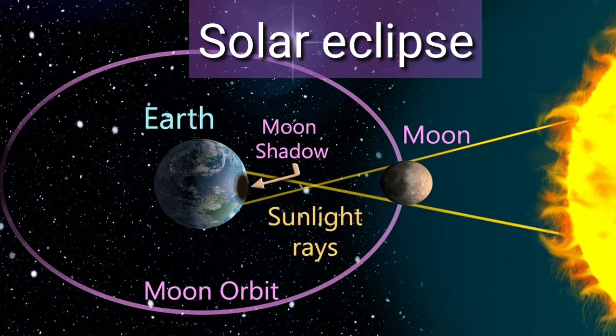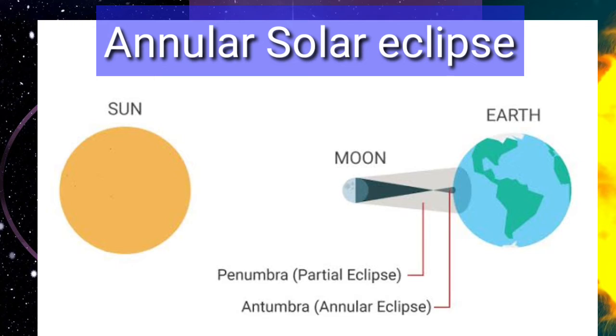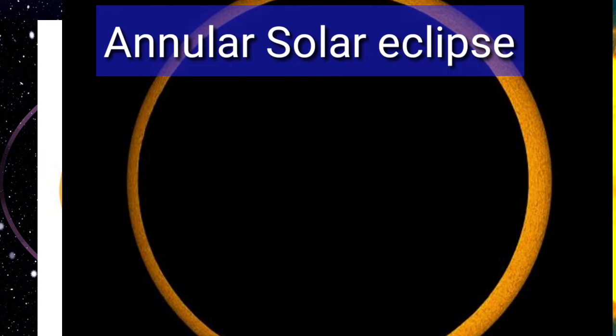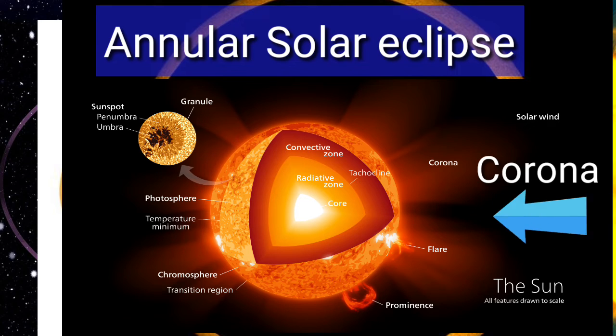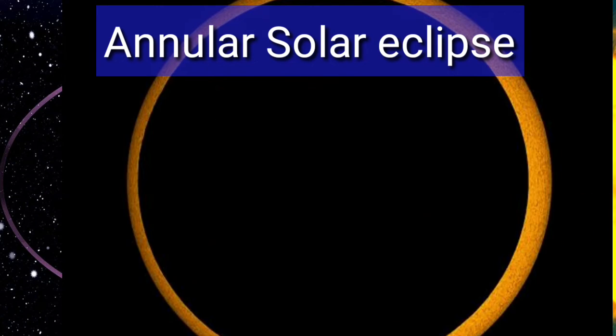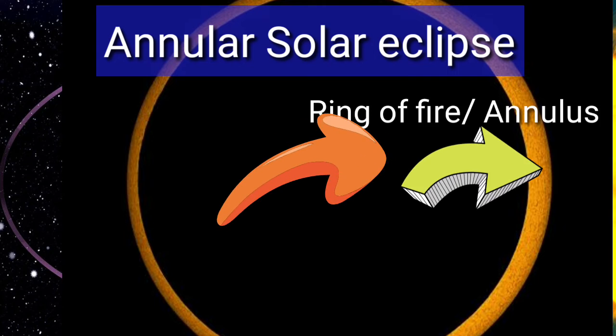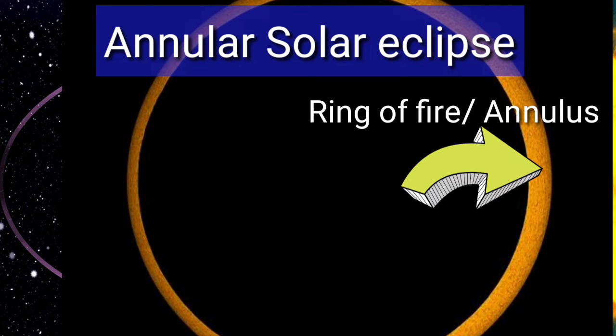Now let's understand the annular solar eclipse. An annular solar eclipse occurs when the moon covers the sun's center, making the sun's corona—the plasma surrounding the outer edges of the sun—visible. The outer edges of the sun look like a ring of fire or annulus.